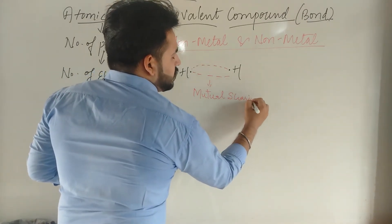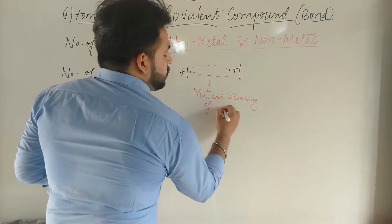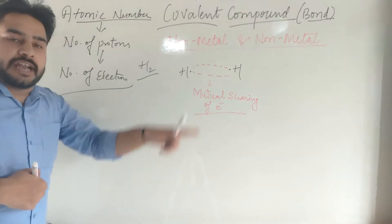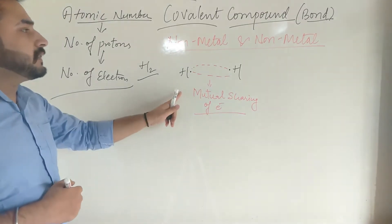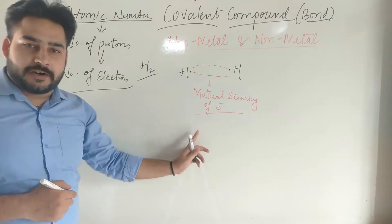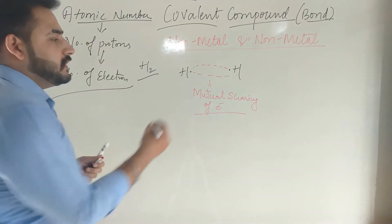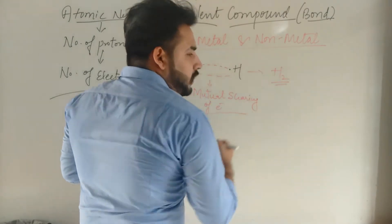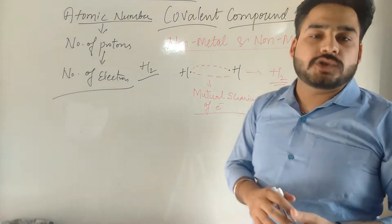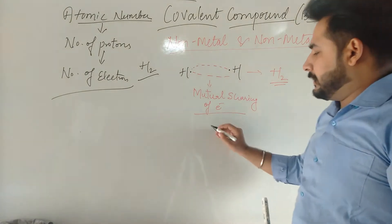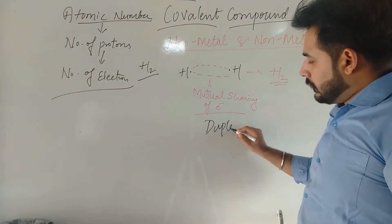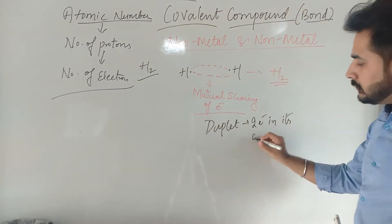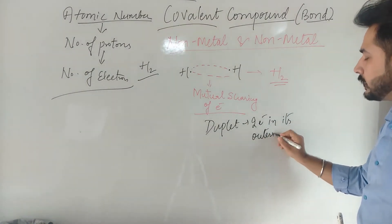Mutual sharing of electrons — this is the second difference between the ionic and the covalent bond. In the ionic bond, a complete transfer of electrons takes place. In the covalent bond, a mutual sharing of electrons takes place. After this attraction, a bond forms. Hydrogen wants to complete its duplet. Duplet means two electrons in its outermost shell.